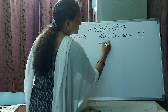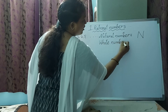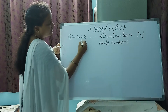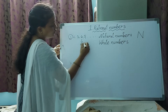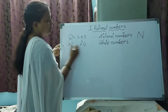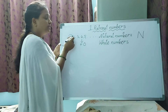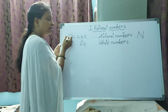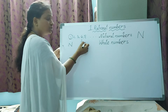Next: whole numbers. If you add 0 to the natural numbers, you get the whole numbers. The difference between natural numbers and whole numbers is just 0 — all natural numbers are in whole numbers, plus 0 is also included.